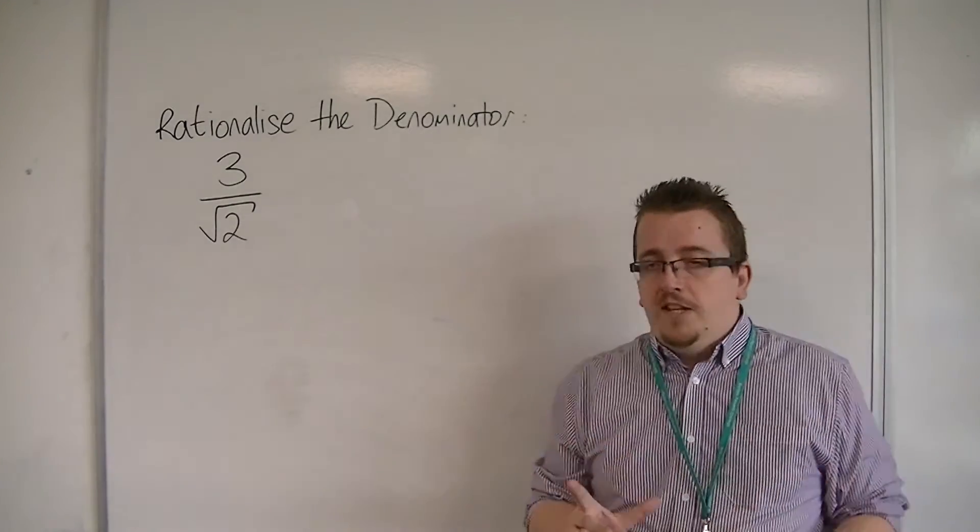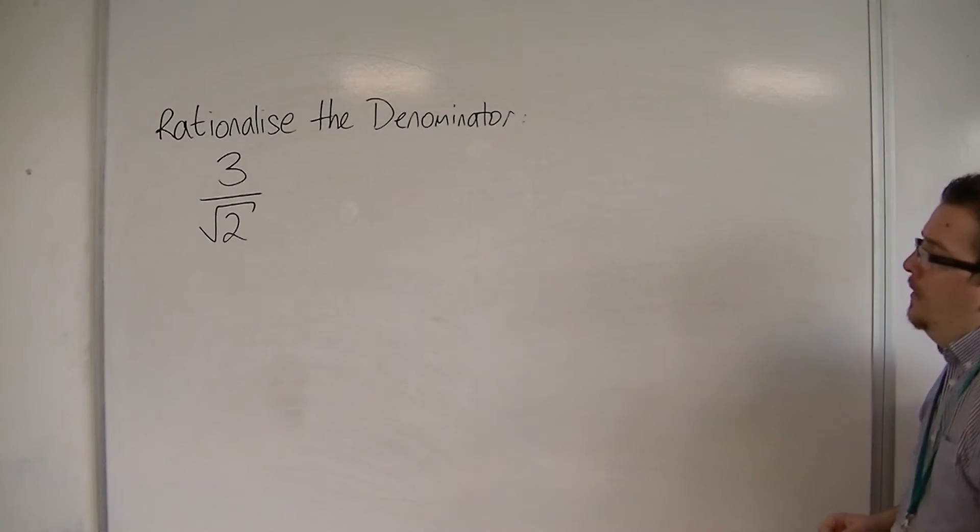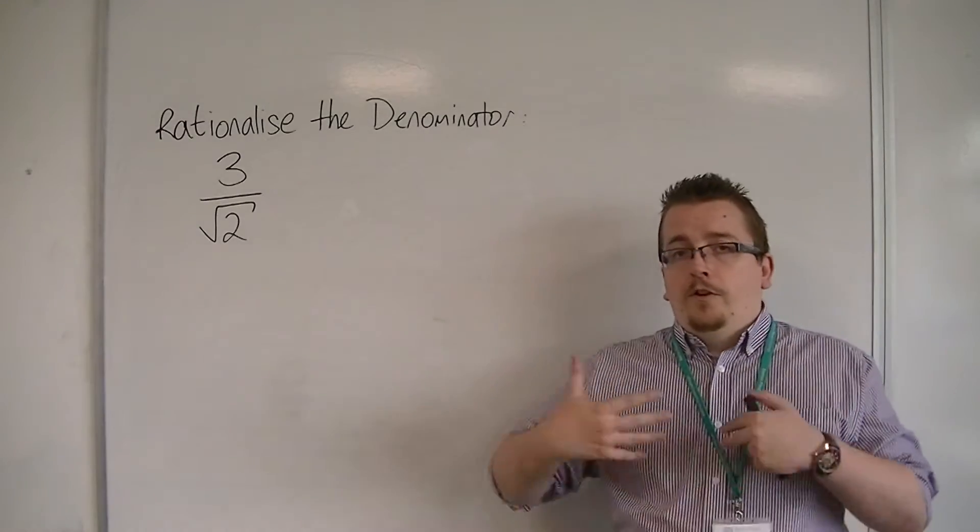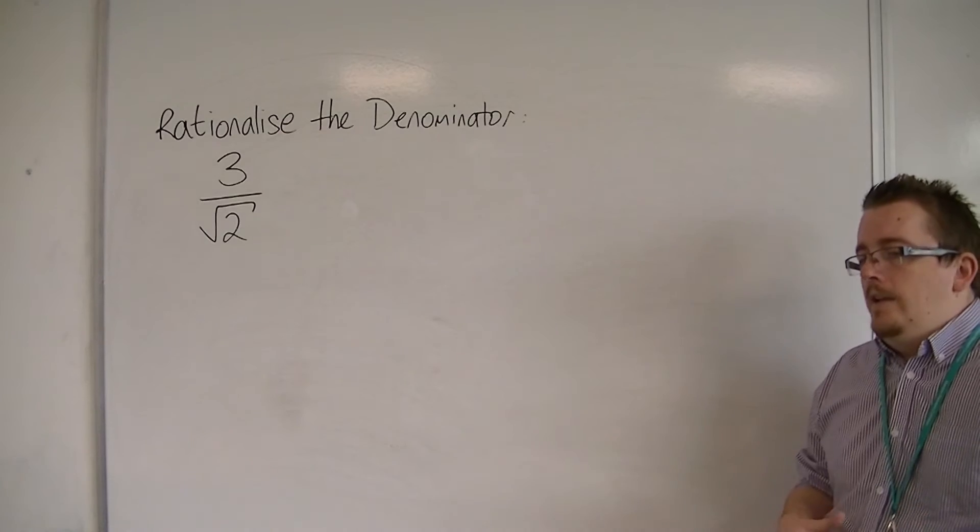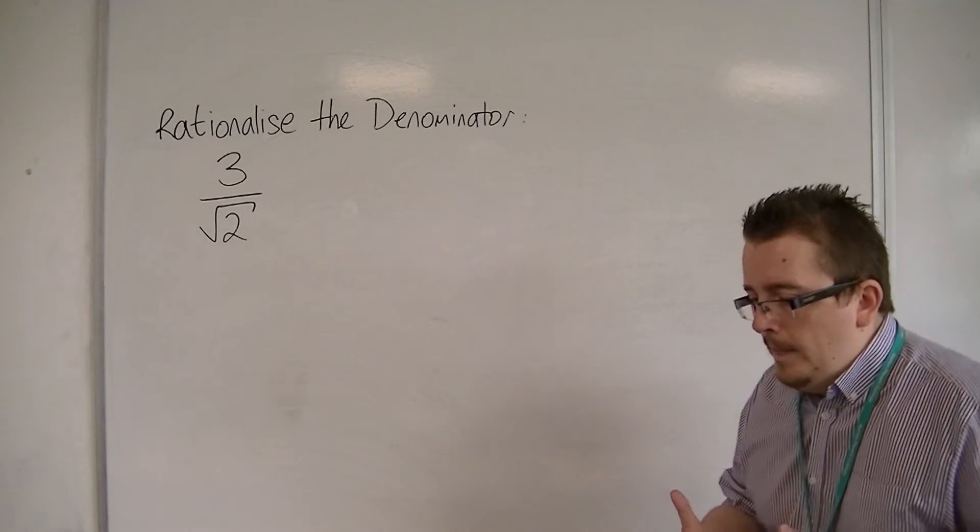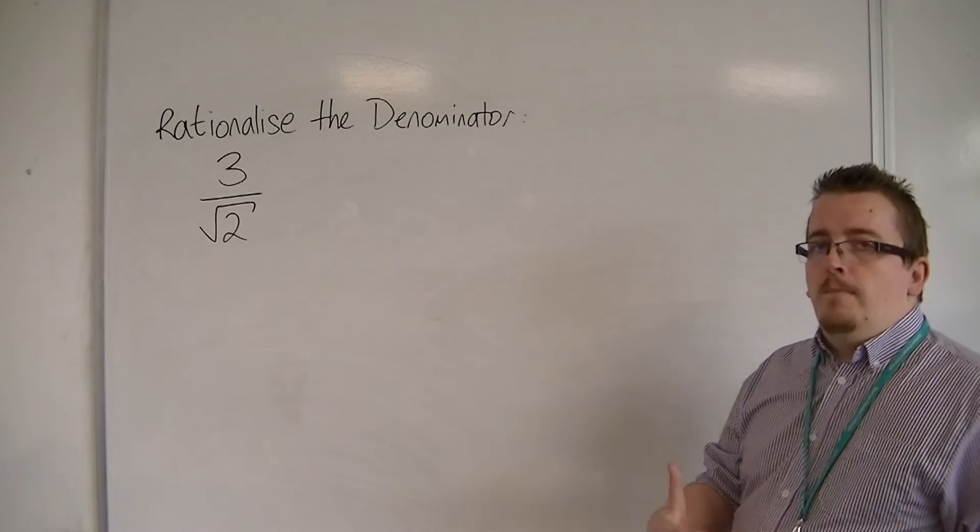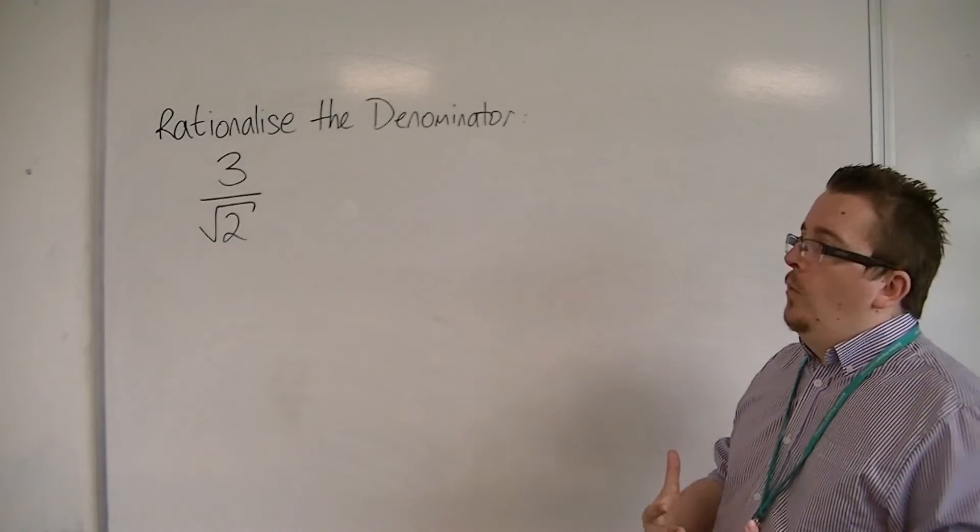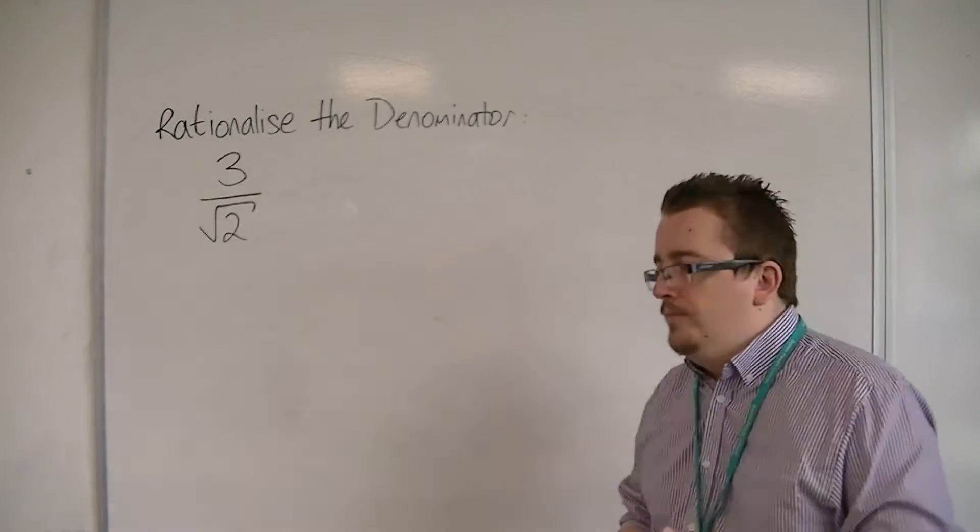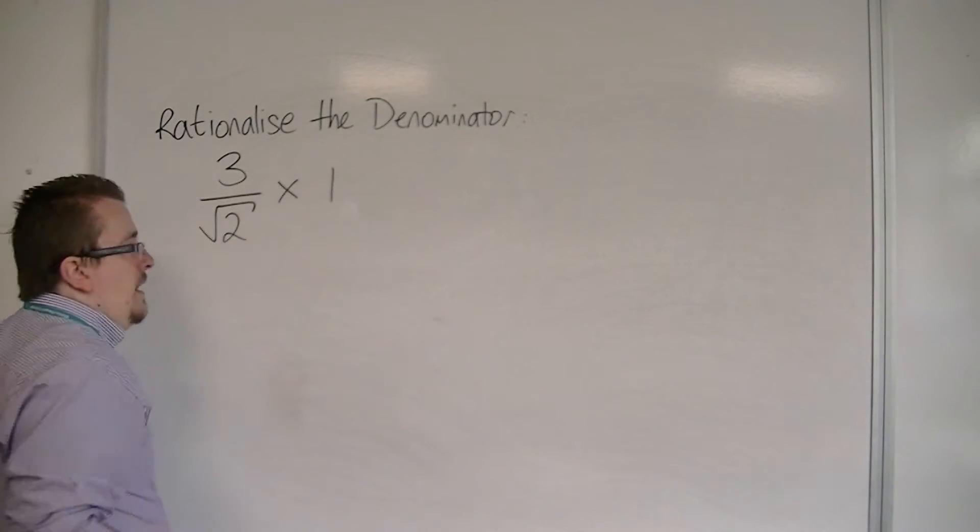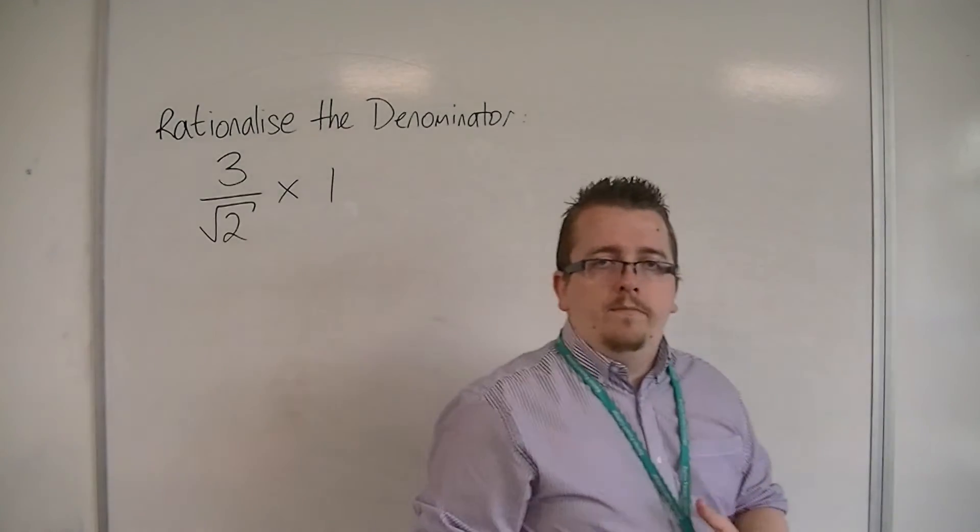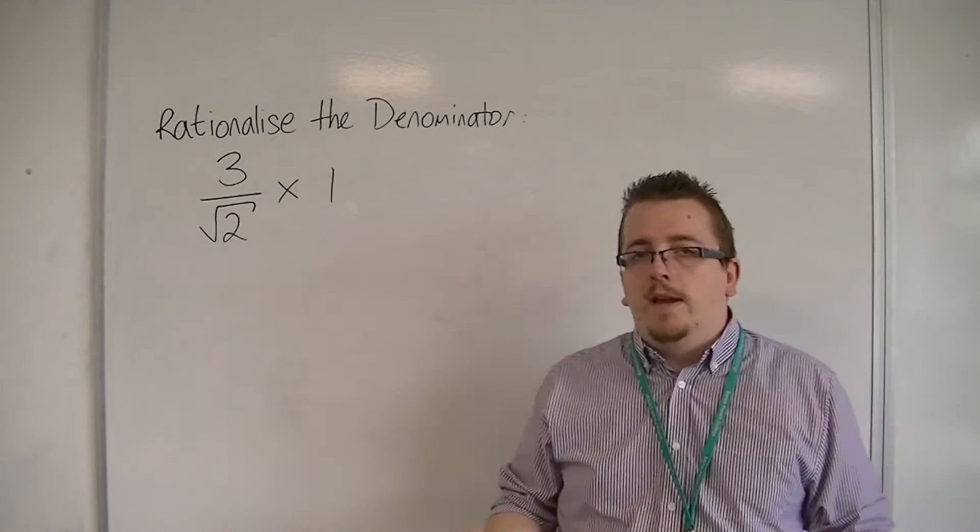So how do we do it? Well, as with a lot of things at this kind of stage, there's a trick. And the trick is that we multiply by 1, which seems a bit strange. Because if I just write down times 1, that's not giving the game away here.